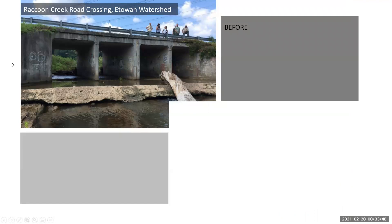Two other exciting projects that the Nature Conservancy has been involved in are Raccoon Creek and Mill Creek. Raccoon Creek is located in the Etowah watershed and is the only biologically significant tributary downstream of Lake Altoona — the major impoundment that divides the Upper and Lower Etowah. Raccoon Creek is home to over 40 different species of fish, including two federally listed species: the federally endangered Etowah Darter and the federally threatened Cherokee Darter. This particular culvert project was ranked as the number one culvert project in all of Northwest Georgia because of that biologically diverse fish population.